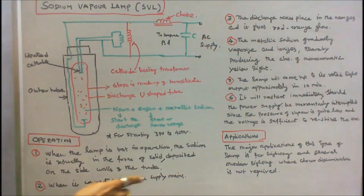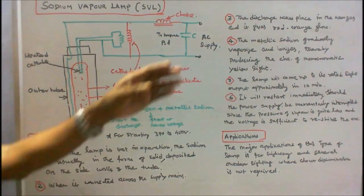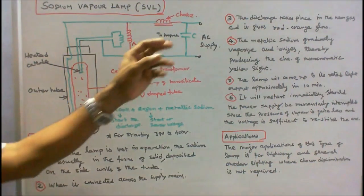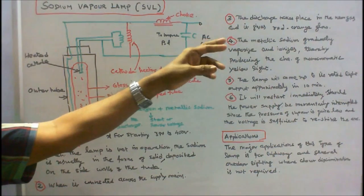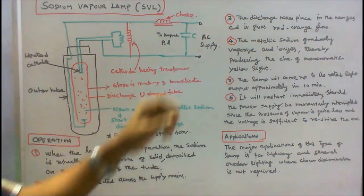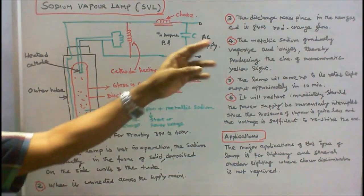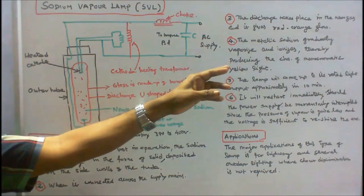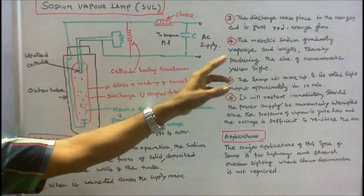When it is connected across the supply mains, that means we are giving a 230 volt 50 hertz supply, the discharge takes place in the neon gas and it gives red-orange glow. The metallic sodium gradually vaporizes and ionizes, thereby producing the characteristics of monochromatic yellow light.